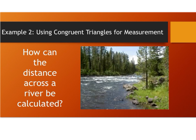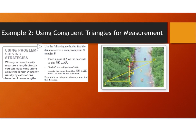Example 2 — using congruent triangles for measurement. I want to answer this question: how can the distance across the river be calculated? If we're standing here, how can I figure out the length across this river?